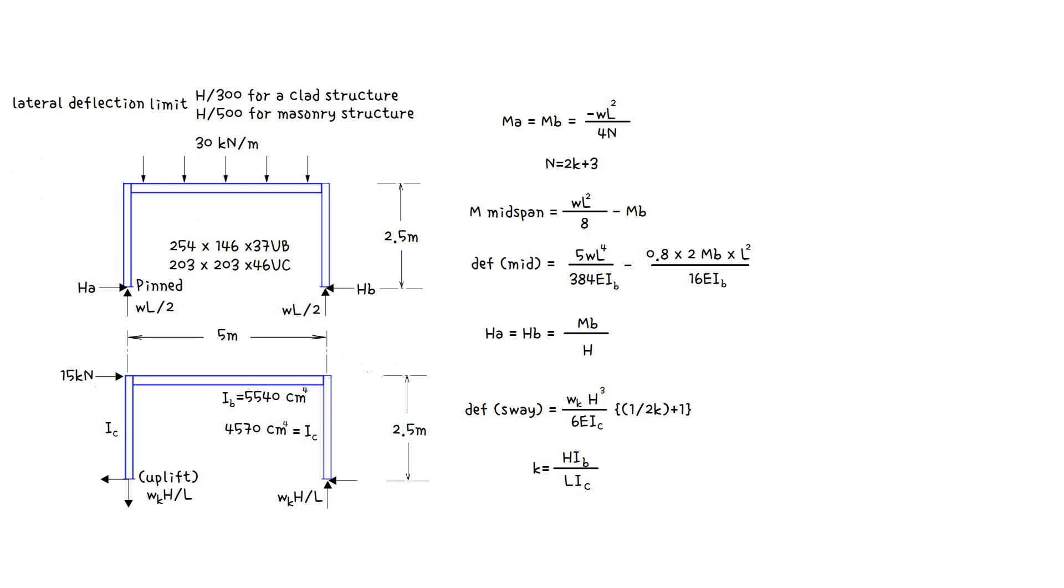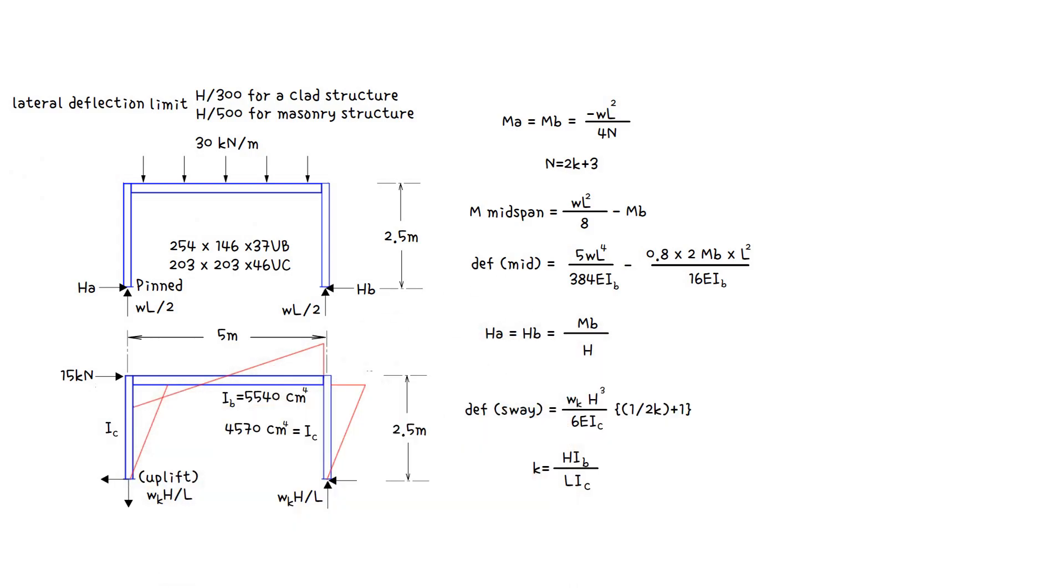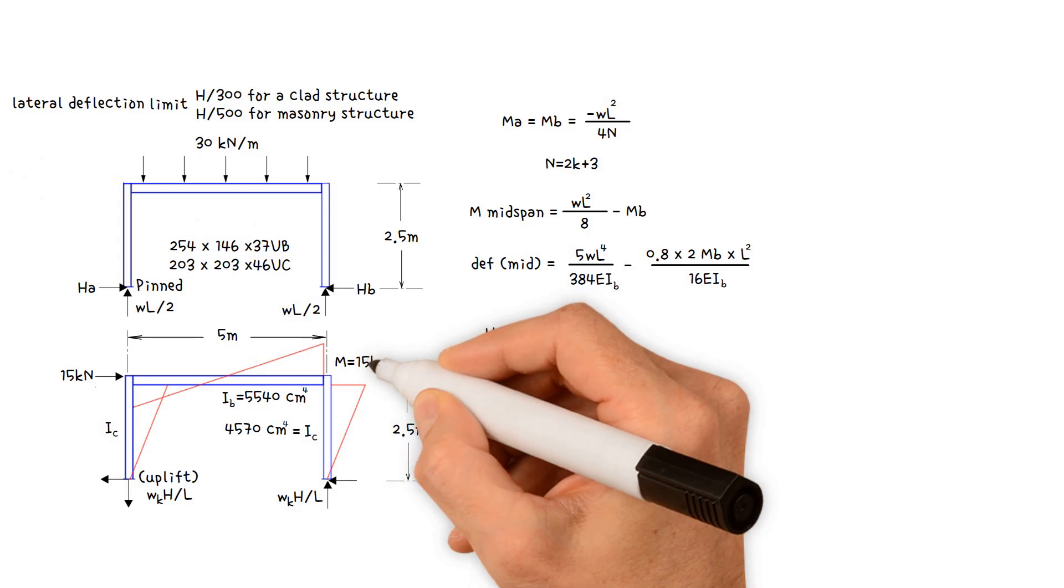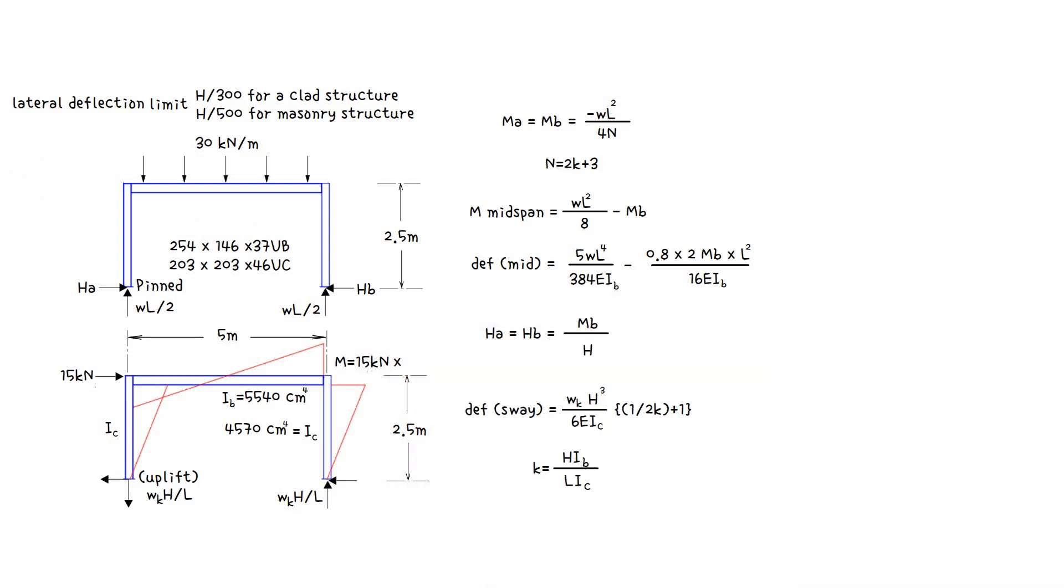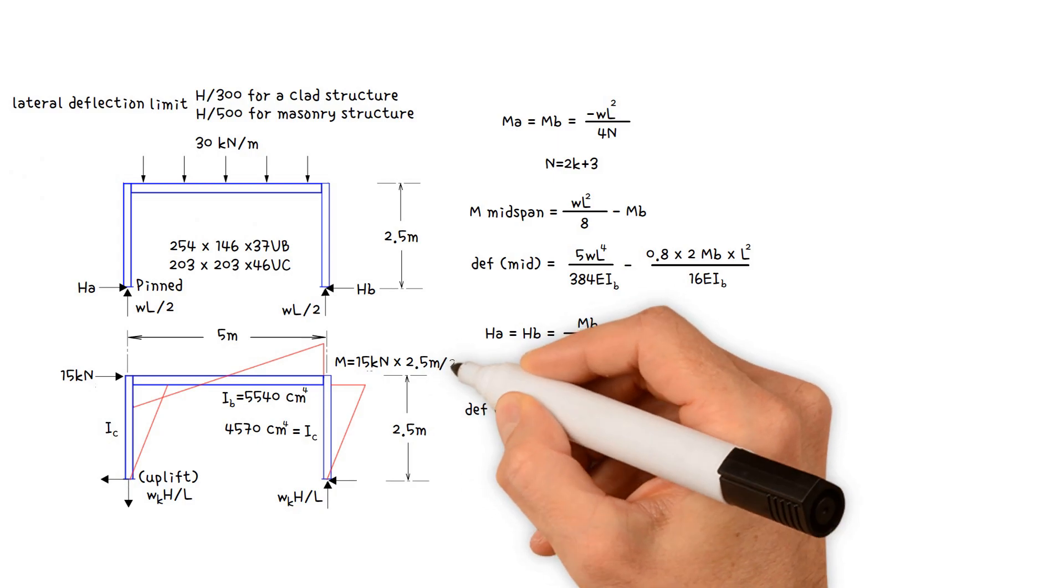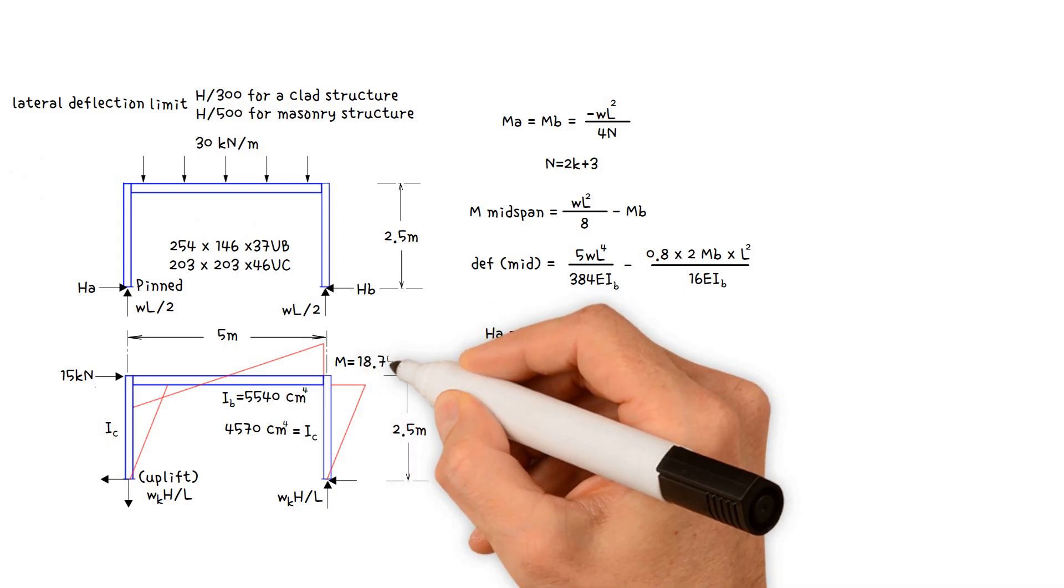First, let's calculate bending moments in post from wind loading. The bending moment is a result of the wind load, equals wind load 15 kilonewtons times the height of the post 2.5 meters divided by 2, equals 18.75 kilonewtons meter.